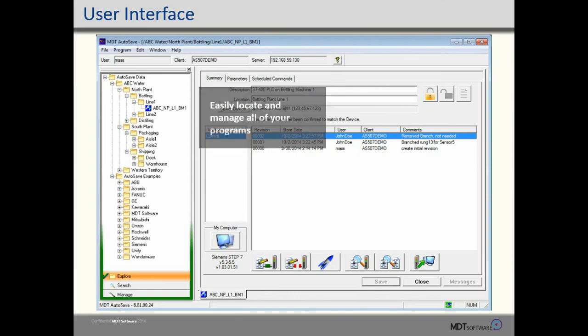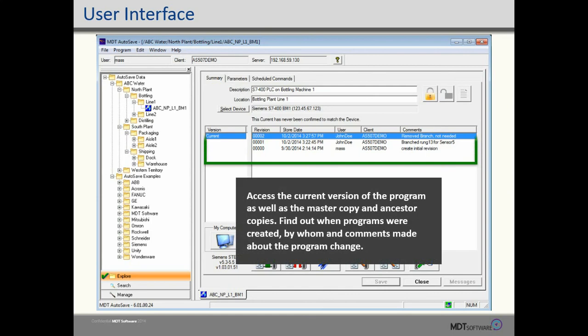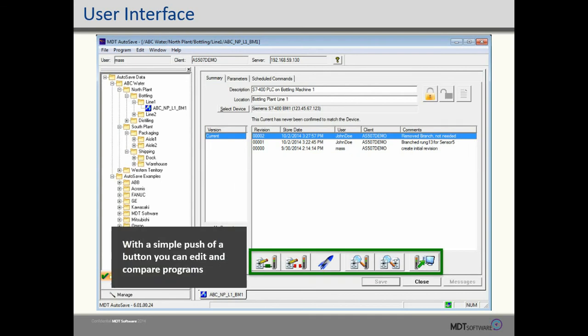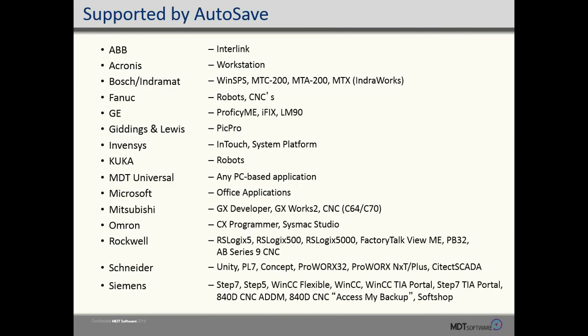Autosave has an intuitive user interface. You can construct the program structure however it makes sense for your facility. The networking is configured in the top part of the program pane. The revision history is shown in this area, and as many revisions as necessary may be kept. Launch and compare buttons are located at the bottom of the screen. Autosave can manage changes for any PC-based application, including office documents and homegrown applications, as well as the extensive list shown here.